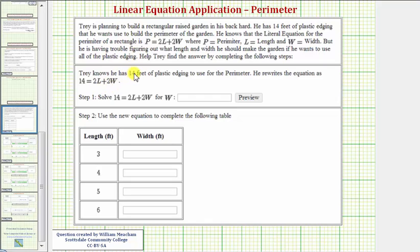Notice how here he substituted 14 for P in the perimeter equation given above. So now he has the equation 14 equals 2L plus 2W. The first step is to solve this equation for W. Let's go ahead and do this below.